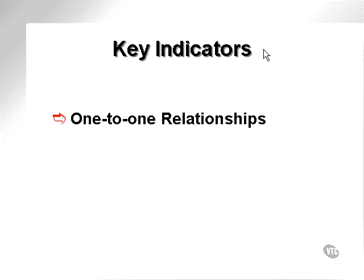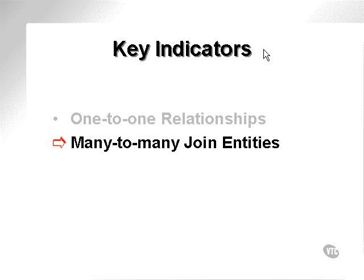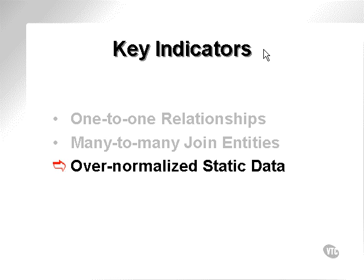One-to-one relationships. Generally, fourth-normal form — perhaps dividing tables up much too far, creating very large SQL statements on multiple table joins. Many-to-many join entities. Look for many-to-many join entities which have a name which is not meaningful. Over-normalized static data. Static data can be removed from transactional data, sometimes a little bit too far. I like to think of normalized static data as second-normal form.